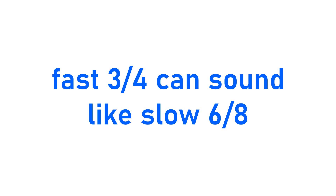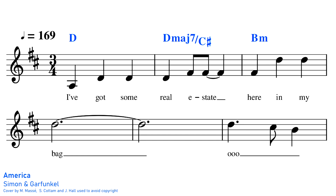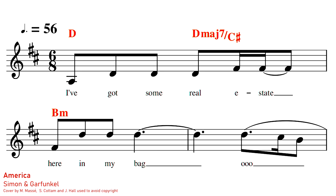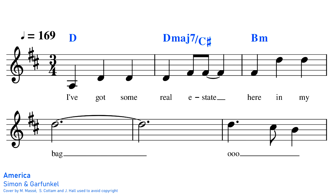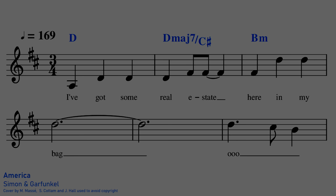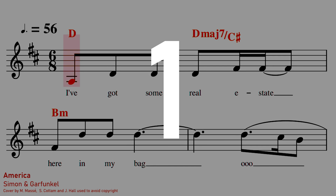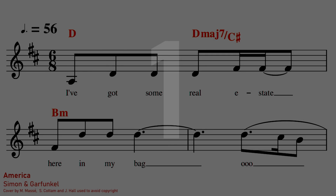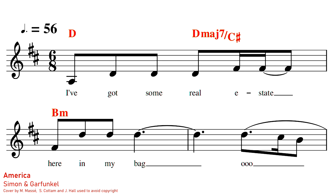Likewise, if a song in 3/4 is played at a fast tempo, it can start to sound like it's in 6/8. For example, there are differing opinions on whether 'America' by Simon and Garfunkel is in 3/4 or 6/8. The relatively fast tempo means you can feel it as having three beats in a bar, or you can feel it as having two beats in a bar. So whether a song is in 3/4 or 6/8 can sometimes be up for debate, particularly at a significantly slow or fast tempo.